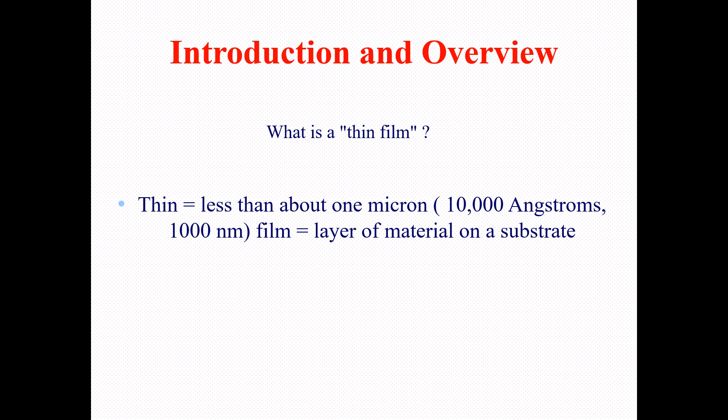A thin film should be a layer of material on a substrate. The full definition: a thin film is a layer of material deposited on a substrate with a thickness equal to or less than one micron — that is 10,000 angstroms or 1,000 nanometers. The substrate is very essential for the thin film.